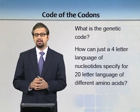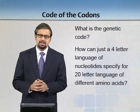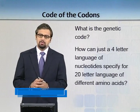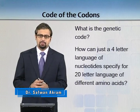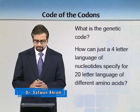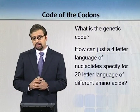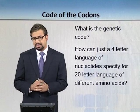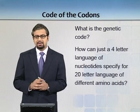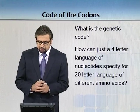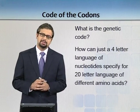We know that DNA is a hereditary material, but what is the genetic code? How does DNA ultimately code for proteins? It's a mystery — we know that there are 4 bases in DNA, but how can just the 4-letter language of nucleotides specify for the 20-letter language of different amino acids?